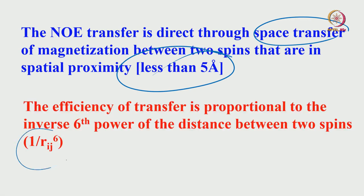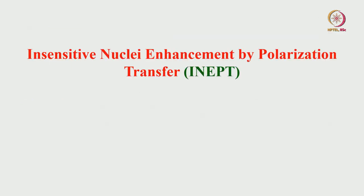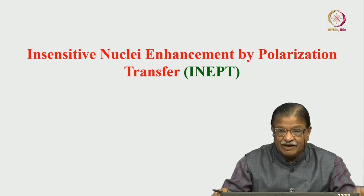The efficiency of NOE depends upon 1/r_ij^6, the sixth power of the distance between two interacting spins. It is very sensitive because with a 1/r^6 dependence, a small variation in r causes an enormous change in intensity. So NOE is distance-dependent and small changes in distance will affect the NOE intensity to a large extent. That will come later.